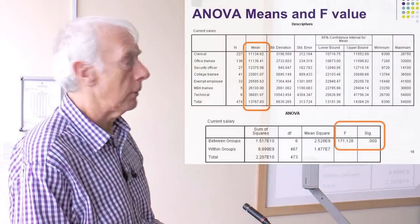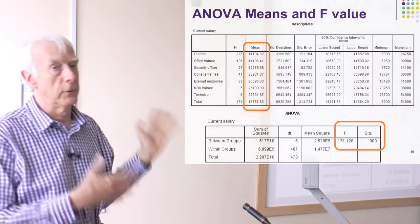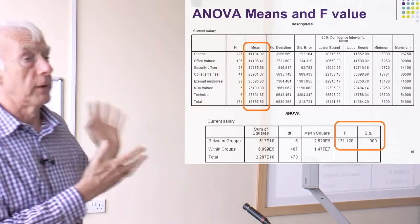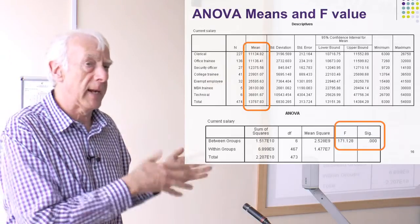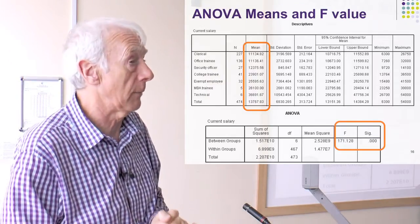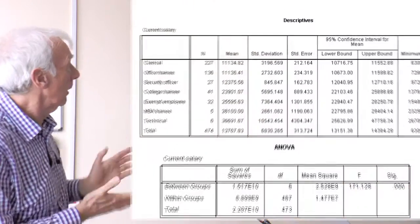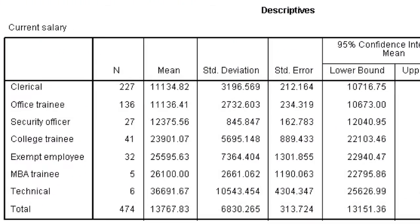Let me show you what you get. I've done a different test here. I've used the same statistic, but different data. This is going back to the bank data that you used in the very first lab session. So what I've got here is a large number of individuals, 474 actually all together, and they're in different job categories. They're clerical, the office trainee, security officer, and so on, and they're getting paid different salaries.